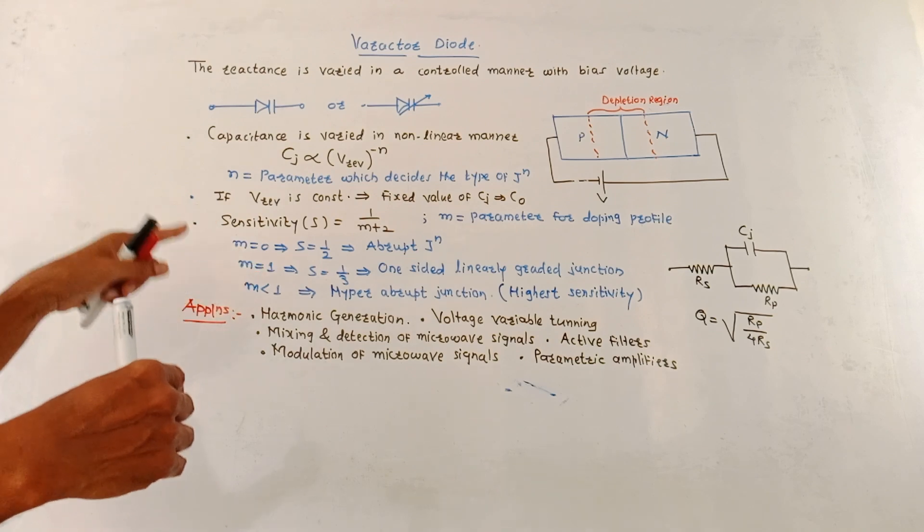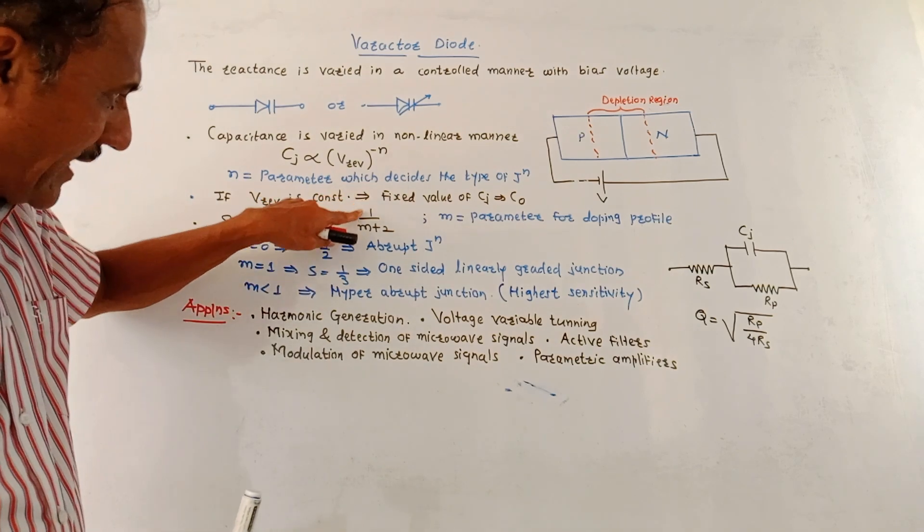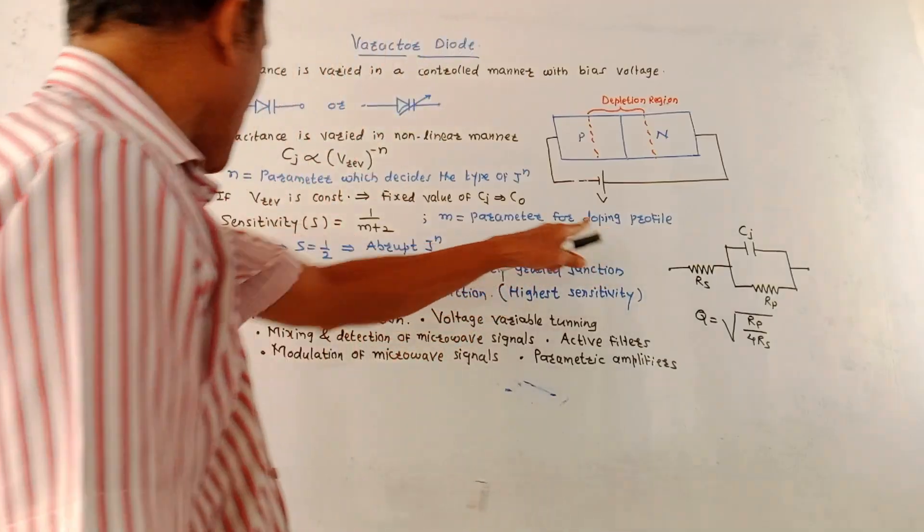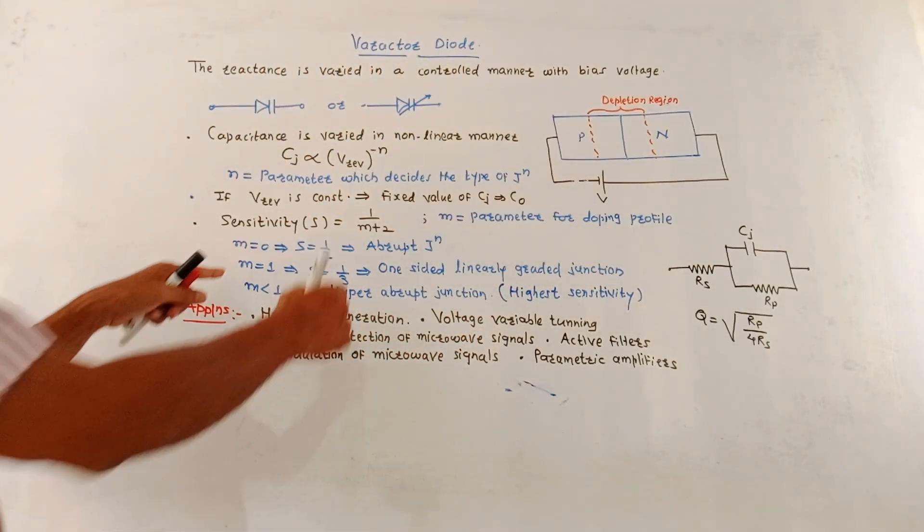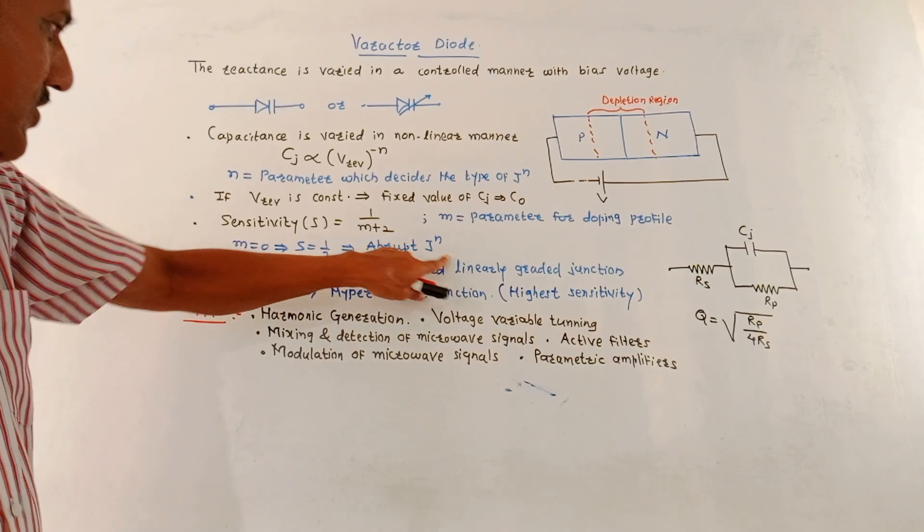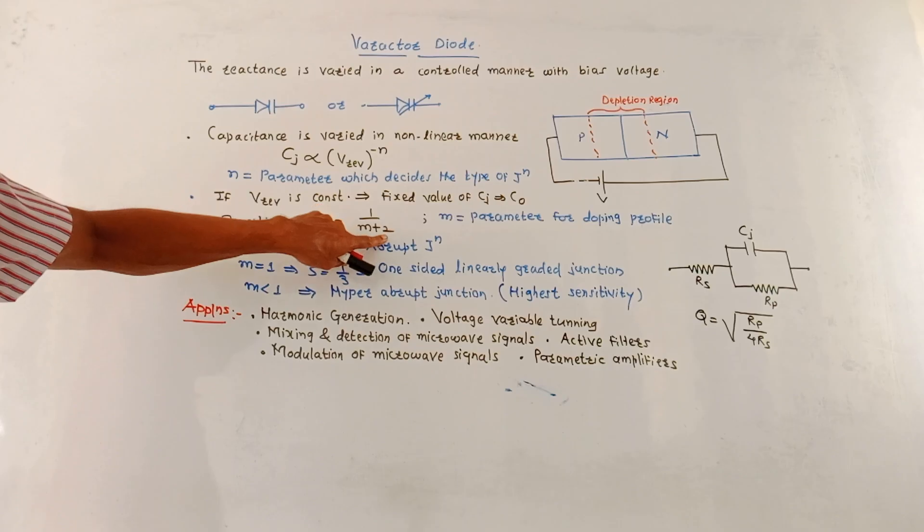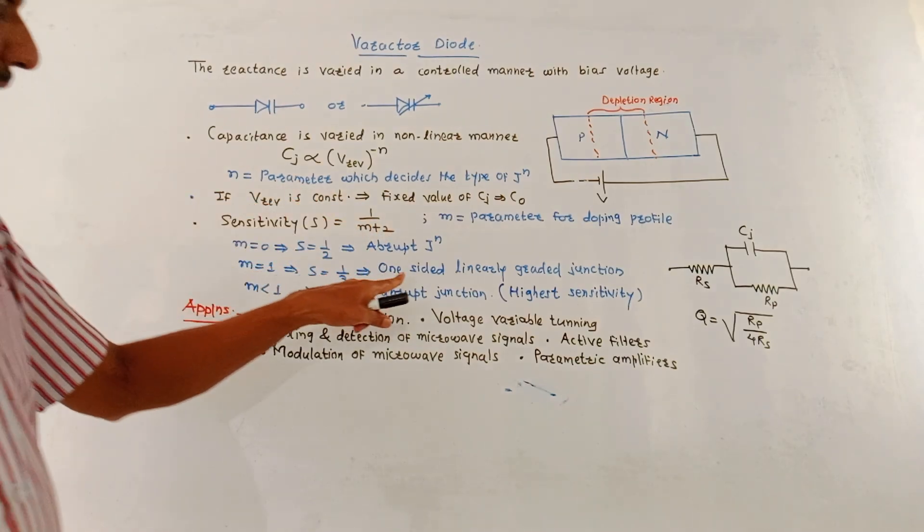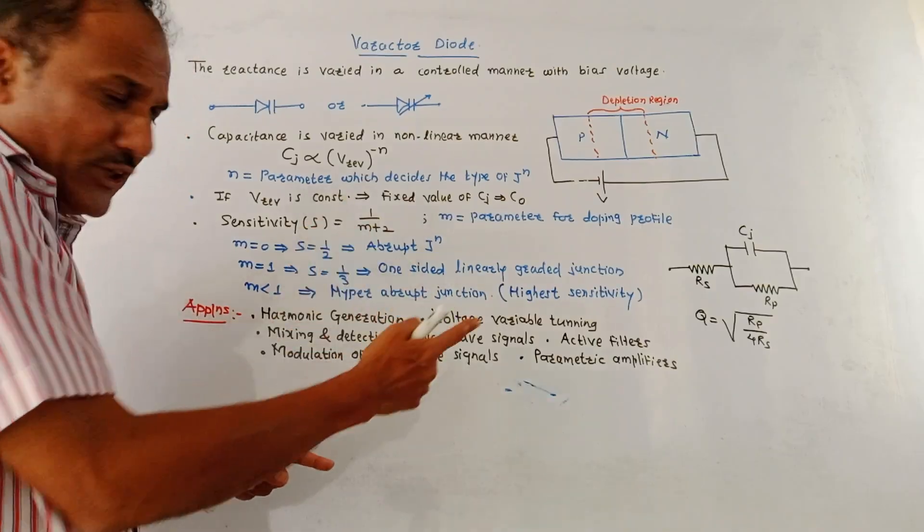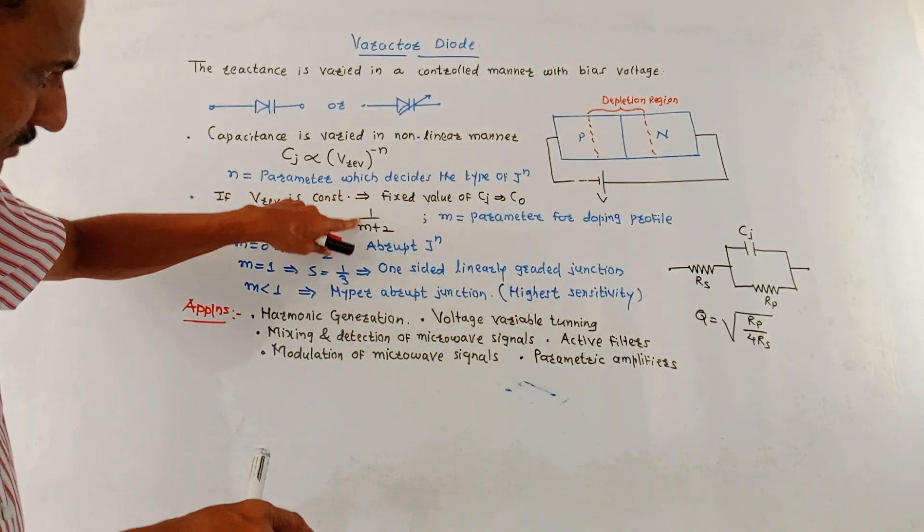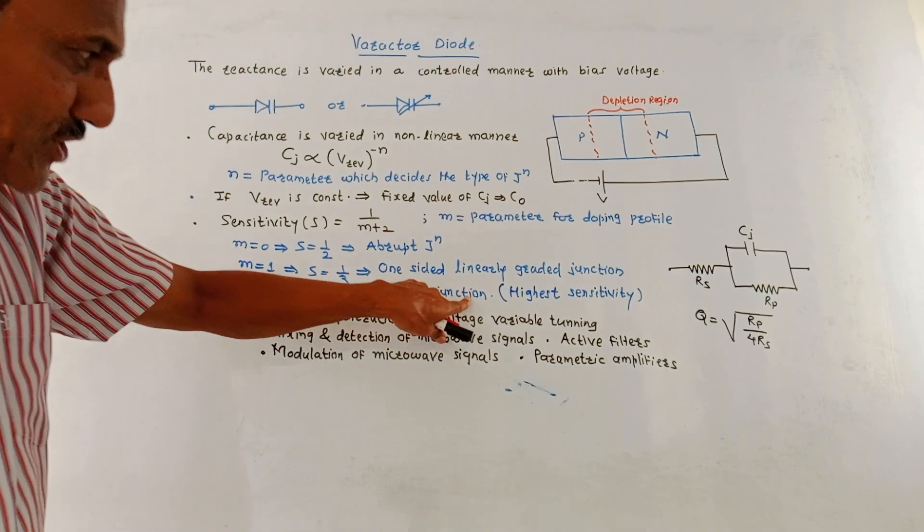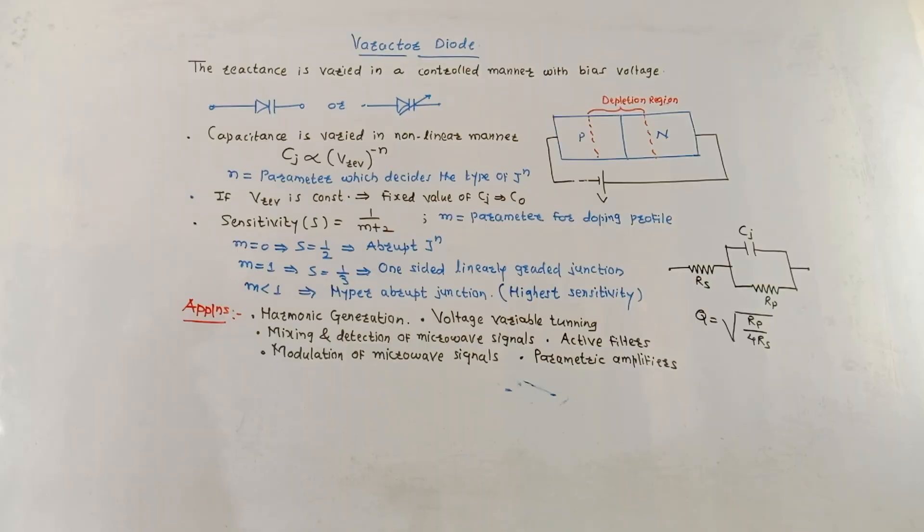There is one important parameter related to this varactor diode, that is sensitivity. It is given by 1 upon m plus 2, where m is the parameter which decides the doping profile. There are different cases. If m is 0, look at this equation of sensitivity. When m is 0, value of sensitivity is 1 half, this gives abrupt junction. If m is equals to 1, again, 1 upon 1 plus 2, that is 1 by 3. So sensitivity becomes 1 by 3. It gives one-sided linearly graded junction. If value of m is negative, let us say m is equals to minus 1, then this becomes 1 upon minus 1 plus 2, that is 1 upon 1, that is 1. So, in that case, it is called hyper abrupt junction and it gives maximum value of sensitivity.